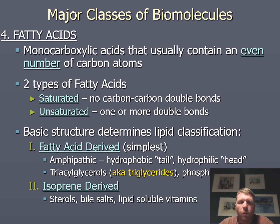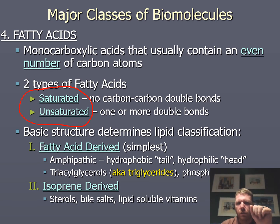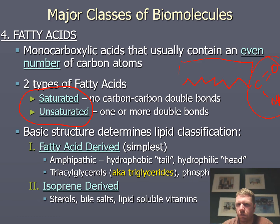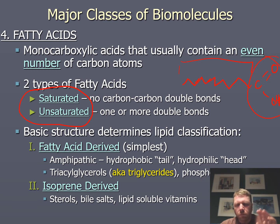The fourth major class of biomolecules is fatty acids. Fatty acids fall into two categories: saturated or unsaturated — all that relates to is the presence of double bonds. Fatty acids have two major components: a carboxyl terminus — an ionizable group — and an aliphatic chain, which is just a chain of carbons and hydrogens. The fatty acid I've drawn here has no double bonds — that's a saturated fatty acid. When I add two double bonds, that becomes an unsaturated fatty acid. We'll get into these in detail later.